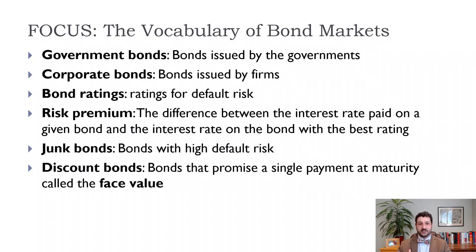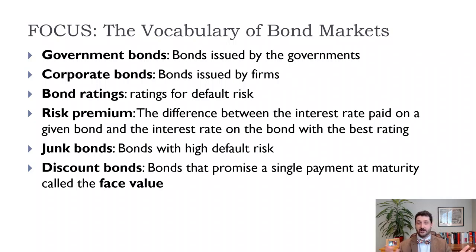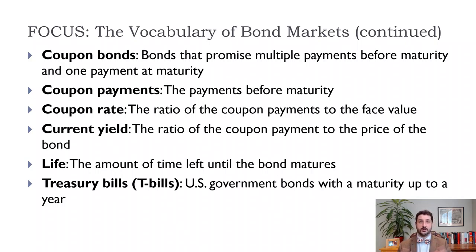Discount bonds are bonds that promise a single payment at maturity. For example, a bond might have a face value of $1,000 and you buy it for $950 now — it doesn't pay any interest during the year, but you get $1,000 at the end, so the interest is effectively that $50 difference. Coupon bonds, which tend to be longer-term, promise multiple payments — maybe every quarter or every year — plus one payment at the end. Those regular payments are called coupon payments. The coupon rate is the ratio of coupon payments to face value, and the current yield is the ratio of the coupon payment to the current price of the bond.